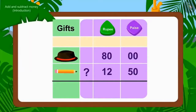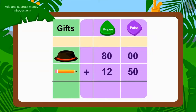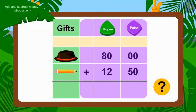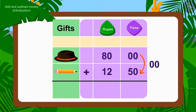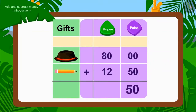What operation do we have to use to do this? Absolutely right — Addition! First, we will add the numbers of paise. Is there an amount of paise in the cap price? No. Is there any paise in the price of a pencil? Yes! 50 paise! How much paise will there be if you add 50 paise to 0 paise? Exactly — 50 paise!